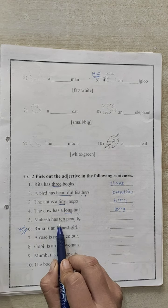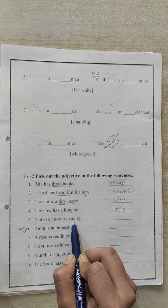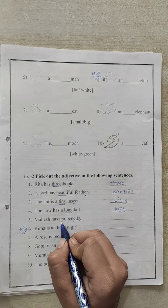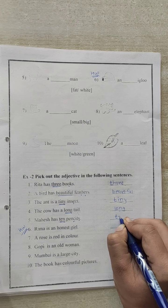Number 5. Mahesh has 10 pencils. How many pencils does Mahesh have? Mahesh has 10 pencils. Here 10 describes the number of pencils. So it is an adjective. So write it here in the blank.